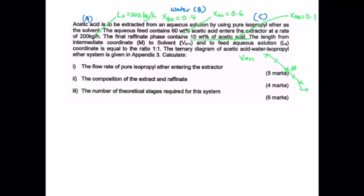You are given the diagram of the acetic acid–water–isopropyl ether system, which is given in Appendix 3. Your job is to calculate the flow rate of pure isopropyl ether, which is the solvent mass flow rate Vn+1 entering the extractor. You also need to find the composition of the extract and raffinate, and the number of theoretical stages required — these answers come from the graph.